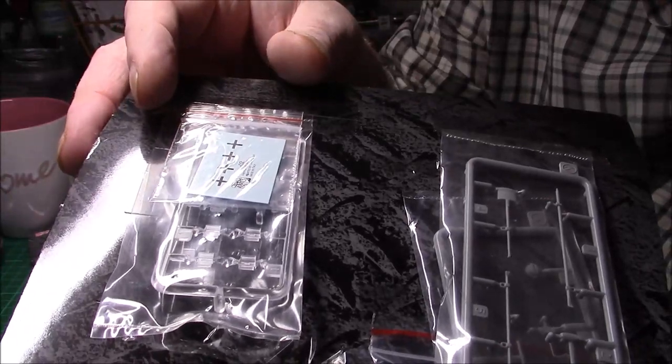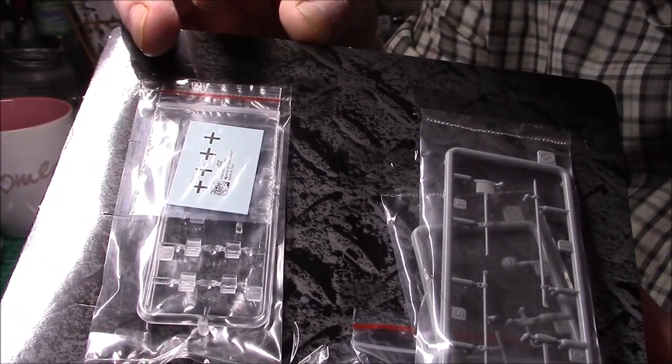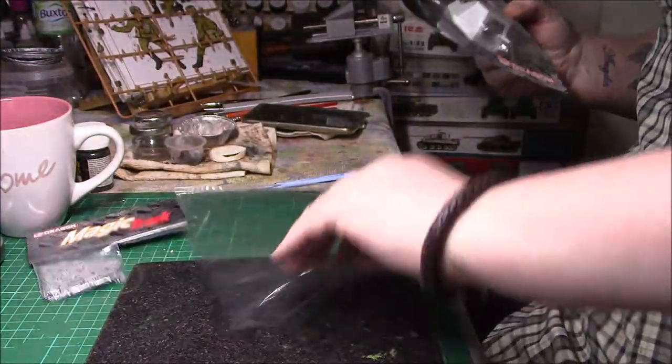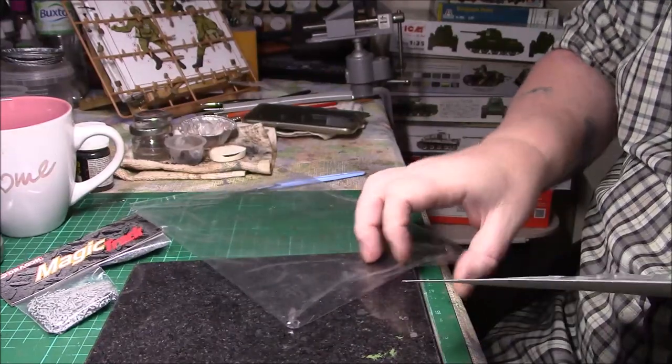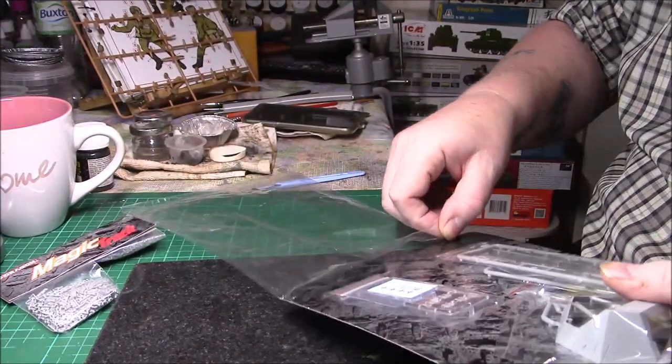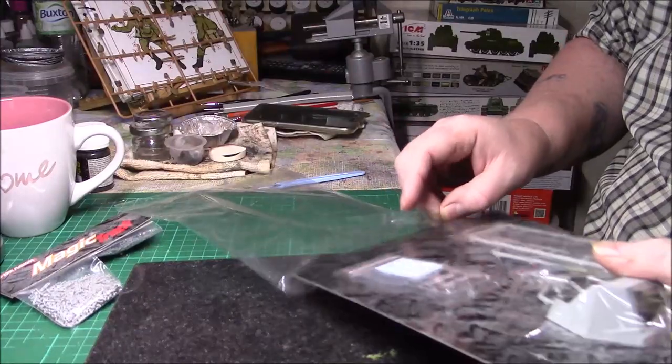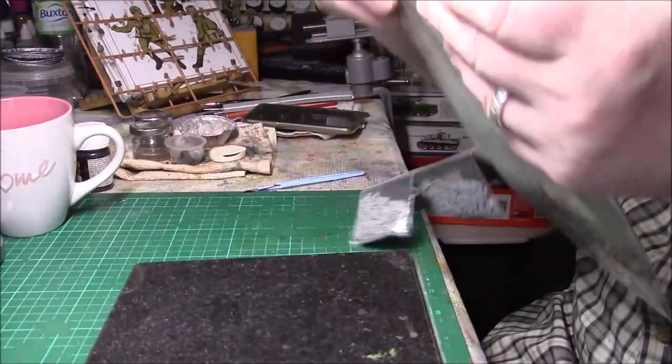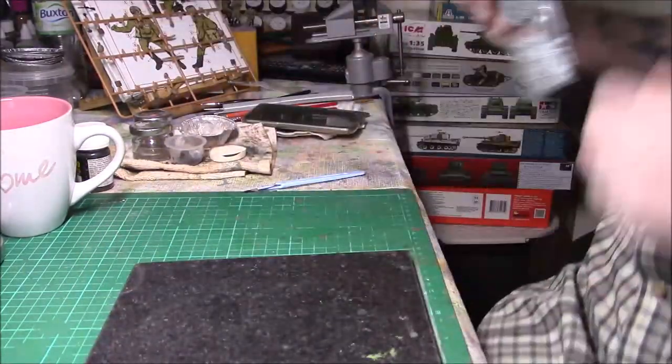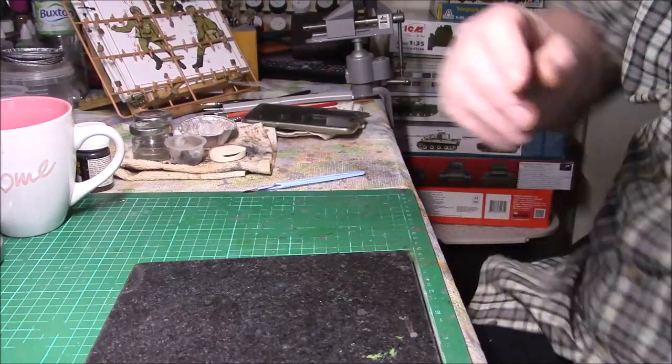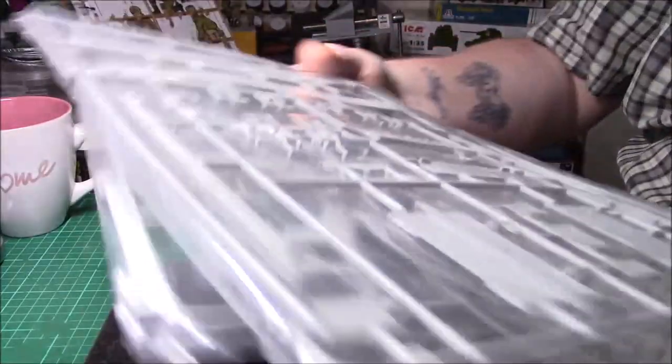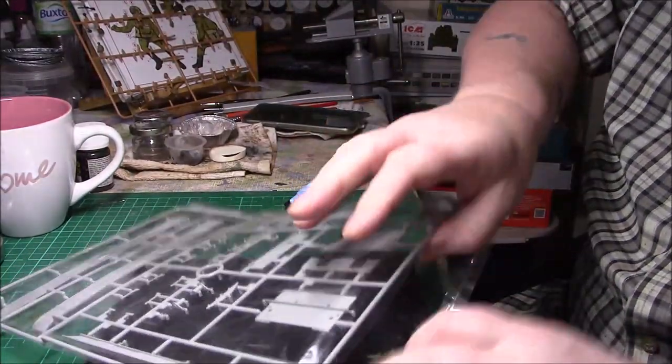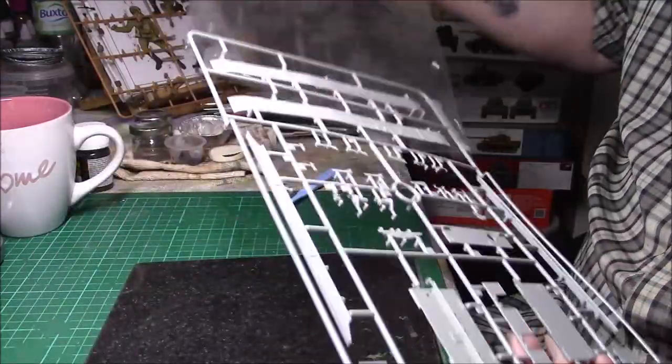As you can see we've got the turret, some small pieces like the pioneer tools and the C-clamps for the tracks. The fire extinguisher looks nicely detailed, typical Dragon. We have a clear sprue with a small set of decals. I think I paid £25, wasn't too bad really. Magic Tracks alone can be quite expensive.